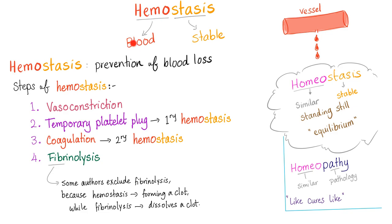Hemostasis: hemo means blood, stasis means stable. Not to be confused with homeostasis, because homeo means similar — together they mean standing still, or equilibrium. Homeo doesn't mean home. Some people say it does. They're wrong.